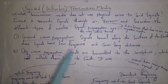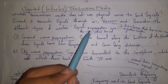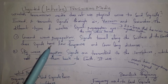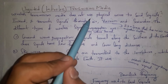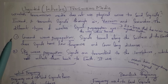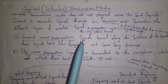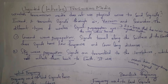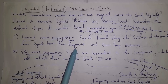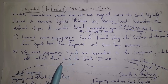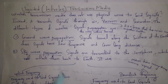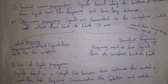There are different types of wireless signal propagation — propagation being the way waves travel. The first type is ground wave propagation, where signals travel along the surface of the earth. These signals have low frequency. Frequency is how many times a wave repeats — higher frequency means faster data transfer, lower frequency means slower data transfer. Ground wave propagation covers long distances.